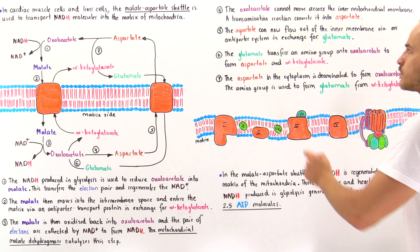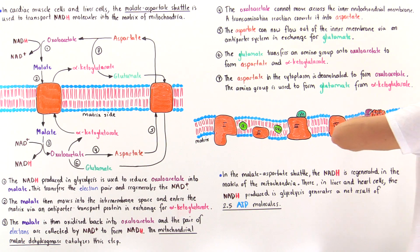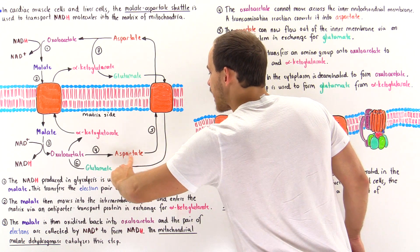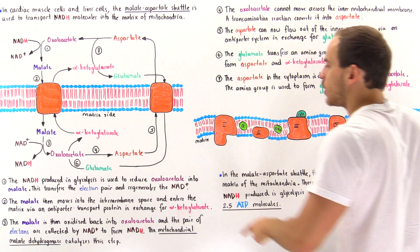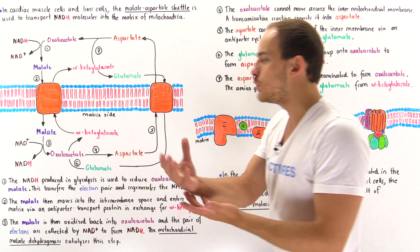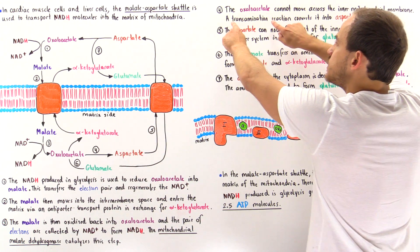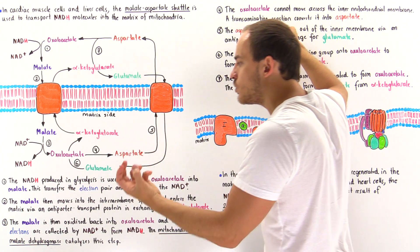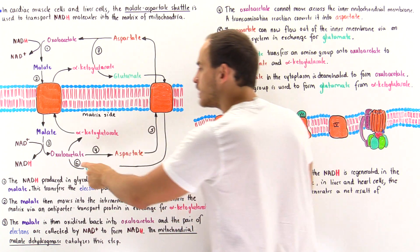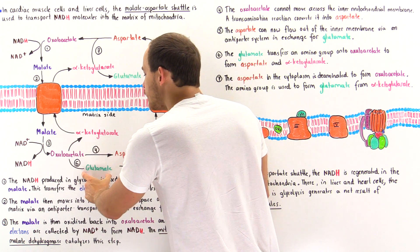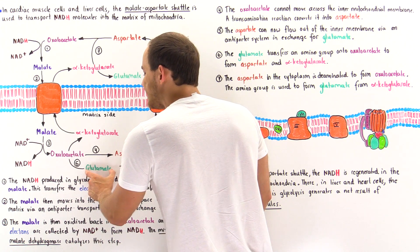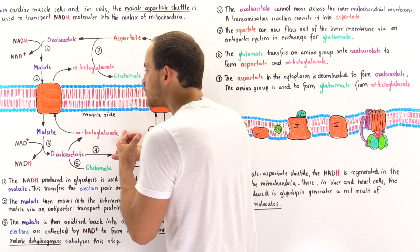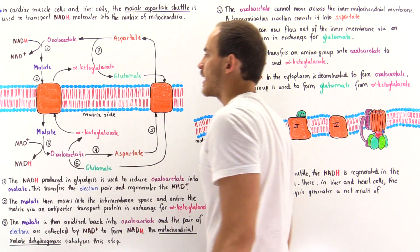In step five, once aspartate is formed, it can flow out of the inner membrane of the mitochondria via an antiporter exchange system in exchange for glutamate — aspartate flows out and glutamate flows in. That incoming glutamate is used in the transamination reaction from step four: glutamate donates its amino group, which is placed onto oxaloacetate to form aspartate. The remaining portion after deaminating glutamate is alpha-ketoglutarate, which helps transport malate in the antiporter exchange system.